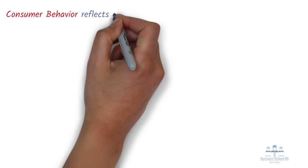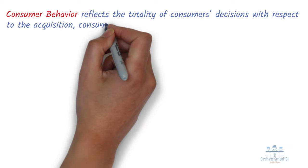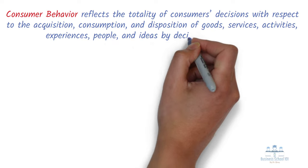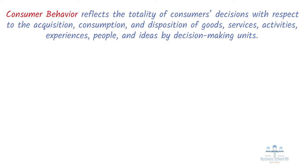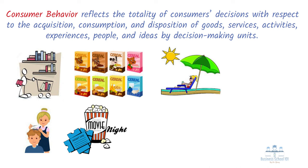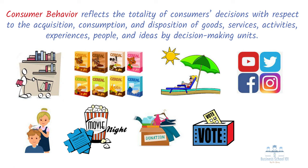Consumer behavior reflects the totality of consumers' decisions with respect to the acquisition, consumption, and disposition of goods, services, activities, experiences, people, and ideas by decision-making units. Consumer behavior includes not only buying tangible products such as books or cereal, but also includes the use of consumers' services, activities, and experiences such as getting haircuts, going to a movie theater, taking a vacation, and donating products at Goodwill. Moreover, consumers make decisions to vote for politicians, make choices to spend time either on Instagram or YouTube, or decide to work out at the gym.